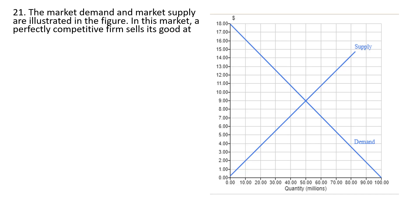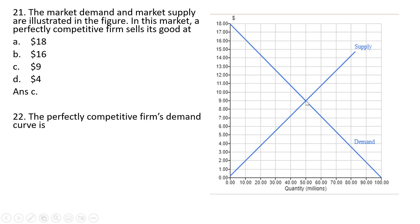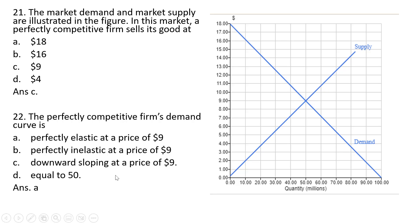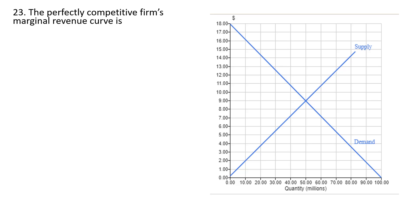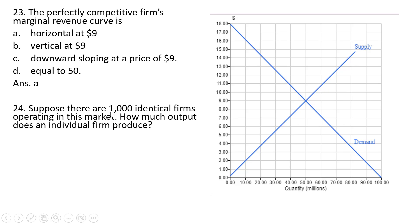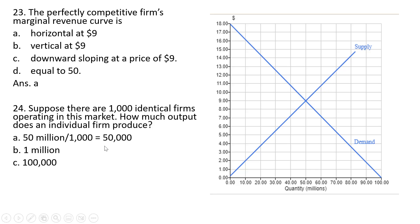The market demand and supply are illustrated. In this market, a perfectly competitive firm sells its good at the equilibrium price of $9. Answer choice C. The perfectly competitive firm's demand curve is perfectly elastic at $9—correct. Answer choice A. The firm's marginal revenue curve is horizontal at $9—correct. With 1,000 identical firms and total market output of 50 million, each firm produces 50,000 units. Answer choice A.